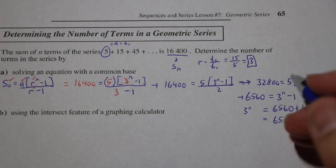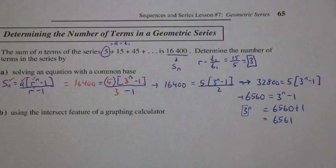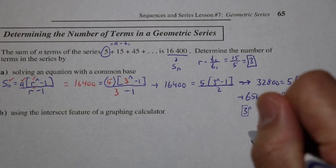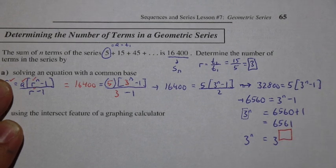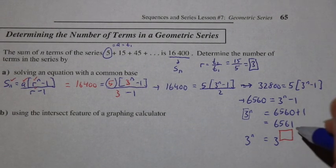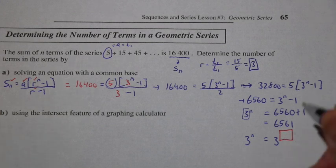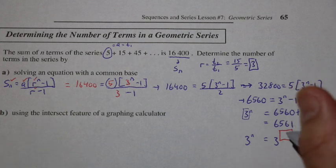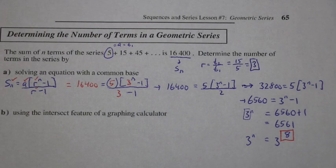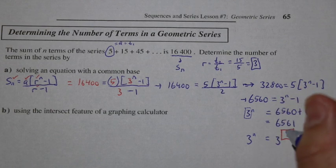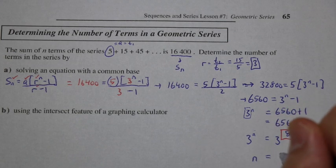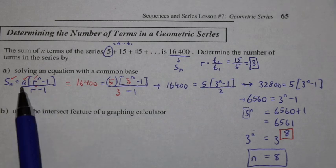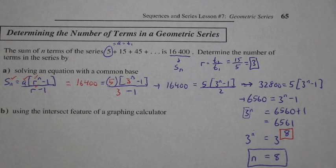Now if we use a common base, we can use base 3. We guess: 3 cubed is 27, not high enough; 3 to the 4 is 81. We keep guessing until we find that 3 to the 8 equals 6,561. Since the powers are equal, the exponents are also equal, so n equals 8. We can plug 8 back into our equation to verify we get 16,400.